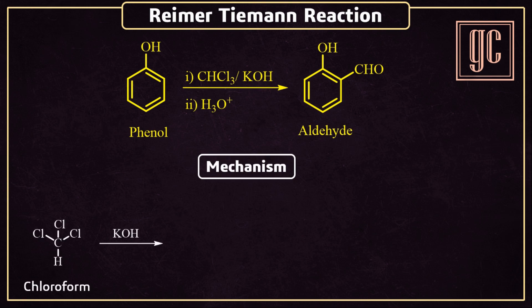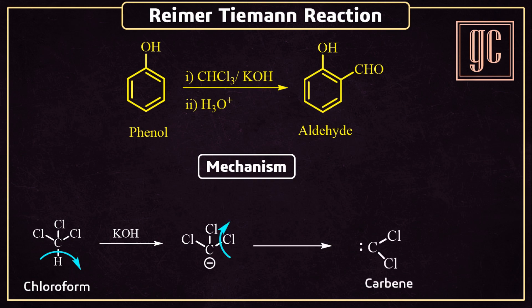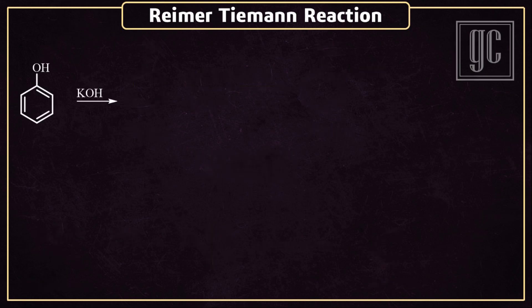This reaction is completed in two steps. First is the formation of carbene: one acidic hydrogen of the chloroform in the presence of strong base is removed, and due to this a carbanion is formed. Now one chlorine group leaves with its bonding electrons, and as a result carbene is formed.